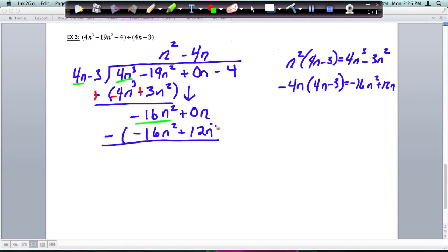Okay, so we're subtracting. So I'm going to put my parentheses, and I'm going to distribute that, and this negative becomes positive, and this positive becomes negative. These cancel the 16n squares, and then I have 0 minus 12 is negative 12n. Bring down the negative 4.